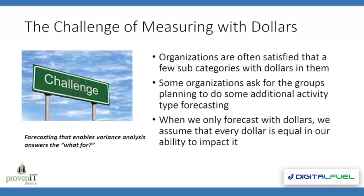The challenge of measuring dollars for the forecast: organizations are often satisfied with a few subcategories with dollars in them. Other times they ask groups forecasting to do some additional activity type planning — a staffing model update or a hardware purchase plan update. But these activities seldom have that 'what for' answer in them, and you have to answer that 'what for' eventually. With a forecast, that usually happens close to year end when the forecast is significantly over- or understated as compared to actuals. Again, we have the challenge that every dollar in a forecast is assumed to be equal in our ability to impact it — we see plugs in forecasts in some of the craziest expense accounts, negative numbers you could never actually achieve.